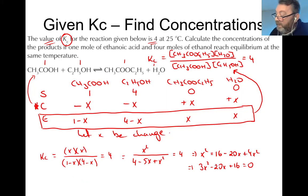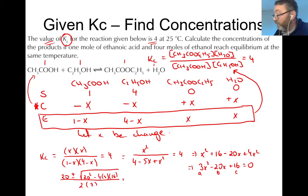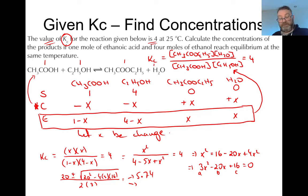Taking it into the minus-B formula: A is 3, B is minus 20, C is 16. So we get: (minus B) = 20, plus or minus the square root of (20² minus 4 × 3 × 16), all over 2 × 3. Put that carefully into your calculator using the fraction mode. The first answer comes out as 5.74 and the second answer, changing plus to minus, comes out as 0.93.